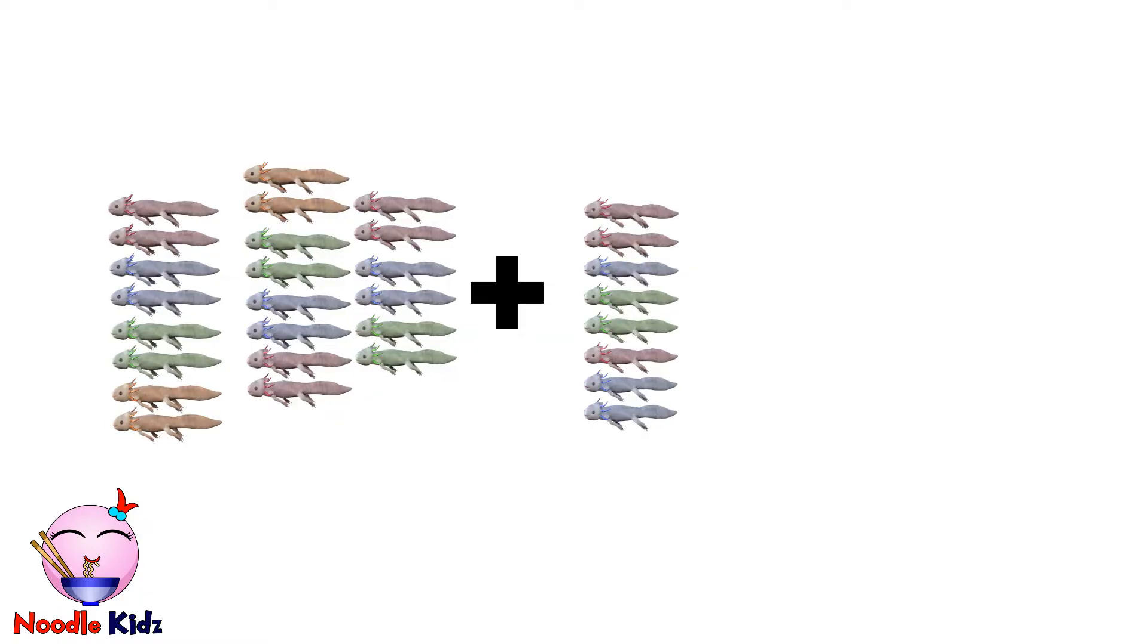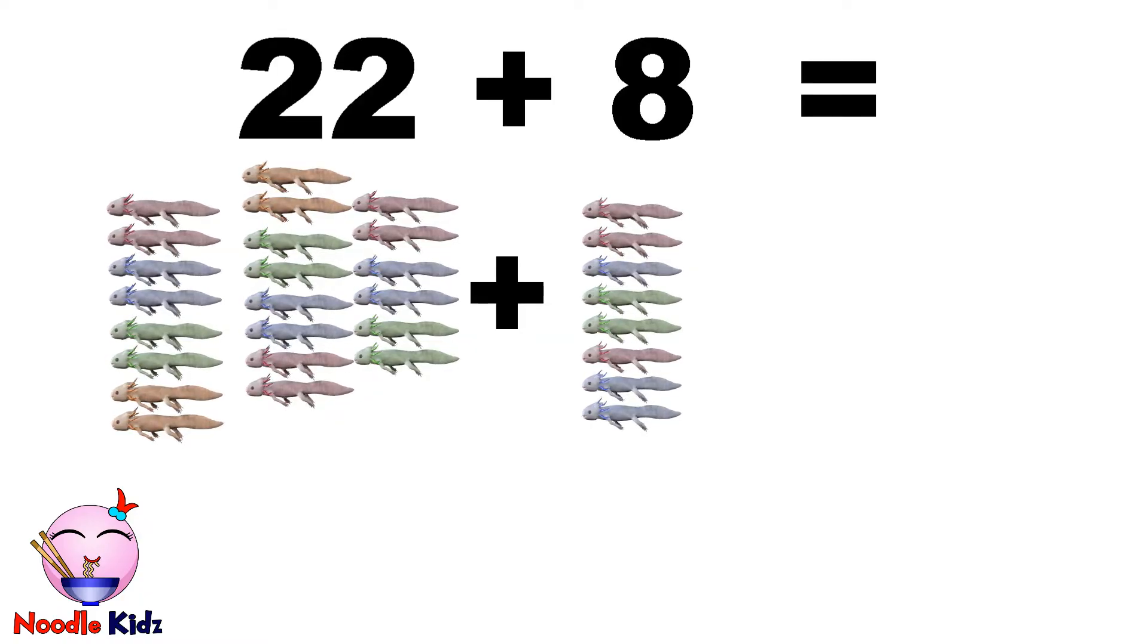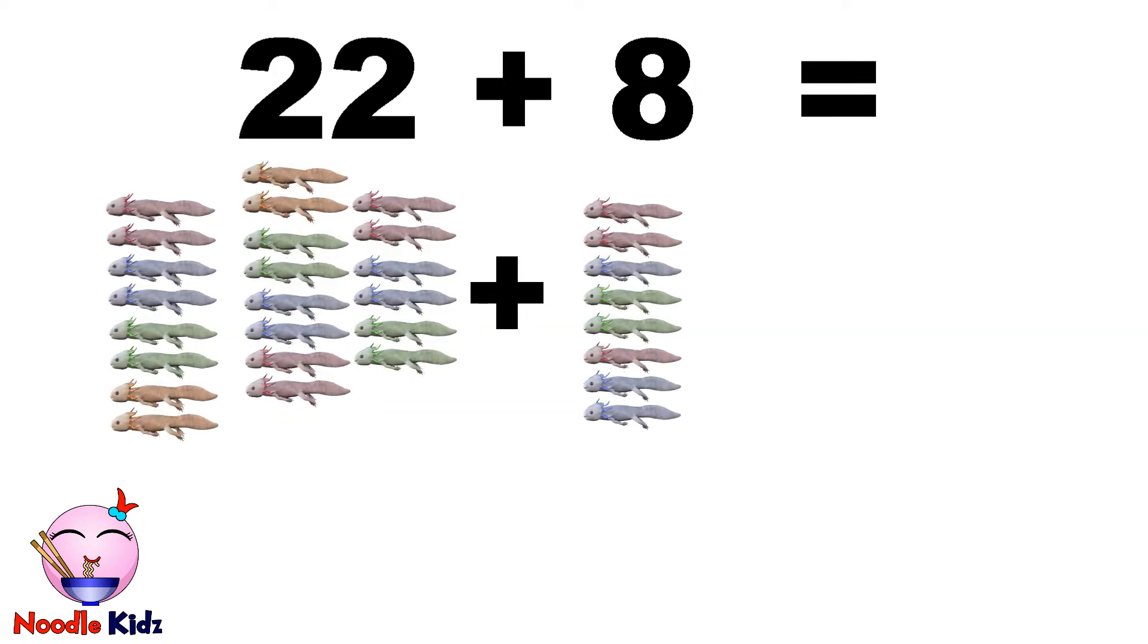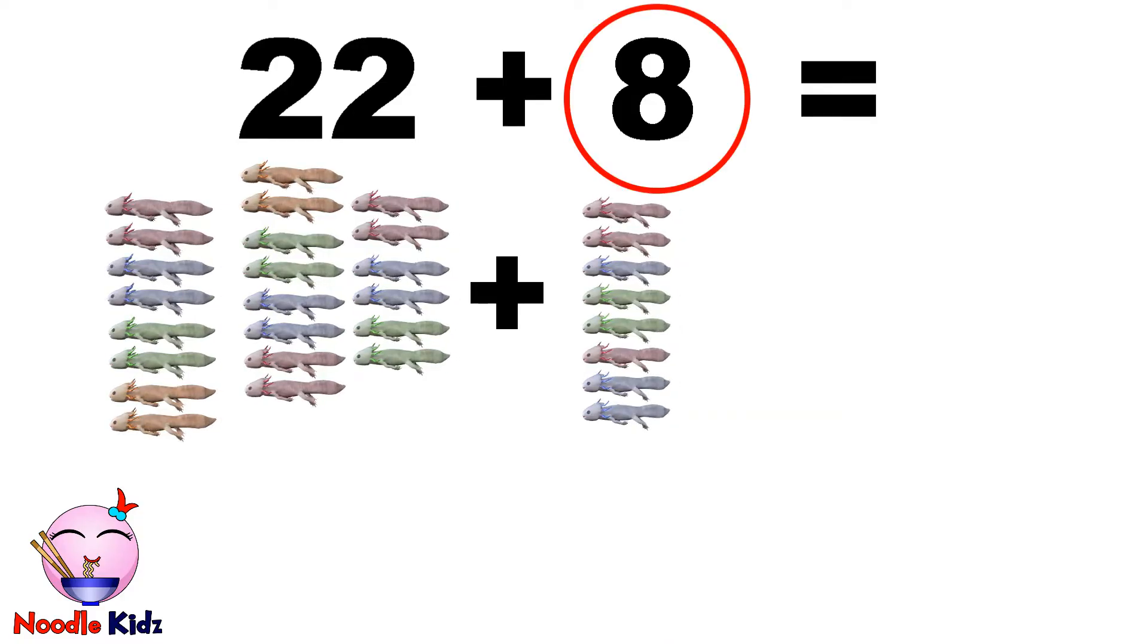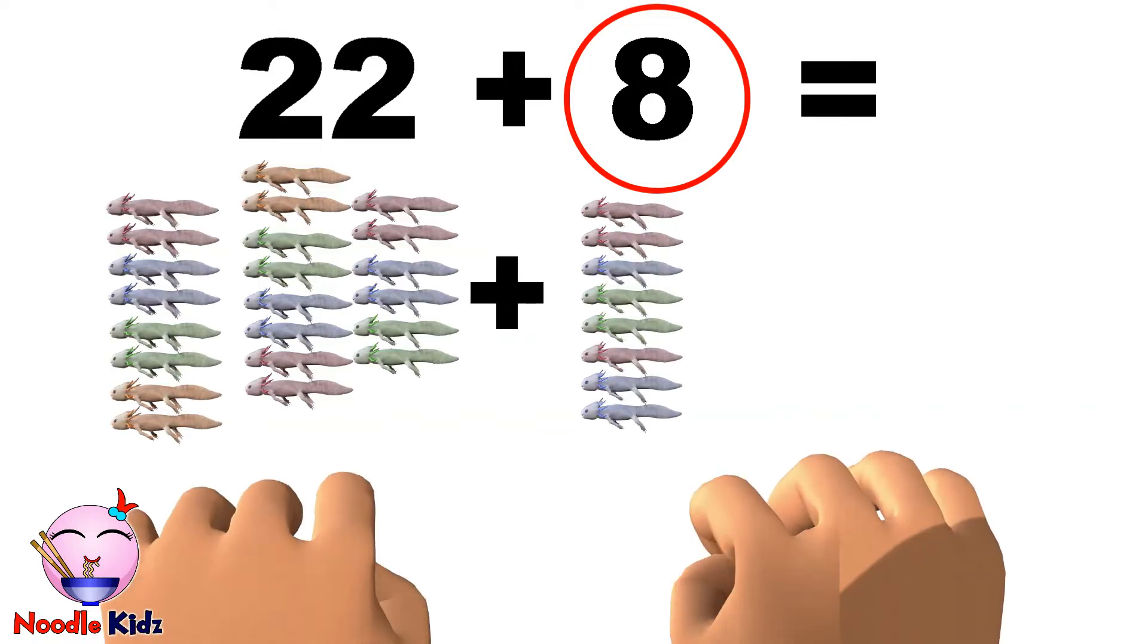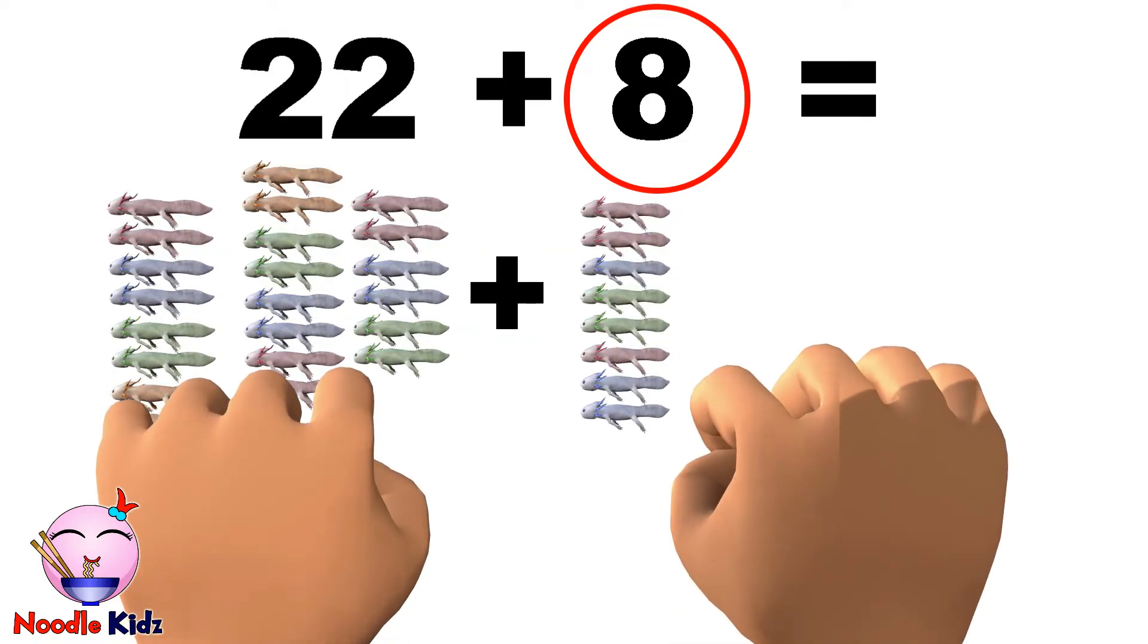Now, what about 22 plus 8? No need to be nervous. It's the same thing. Which one is the smaller number? Yep, 8 is the smaller number. So, let's put up 8 fingers.